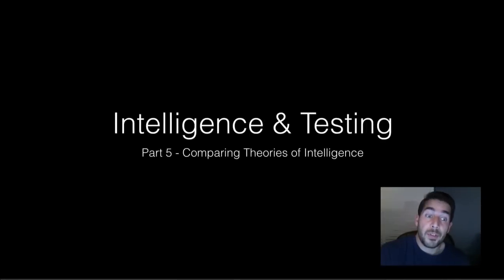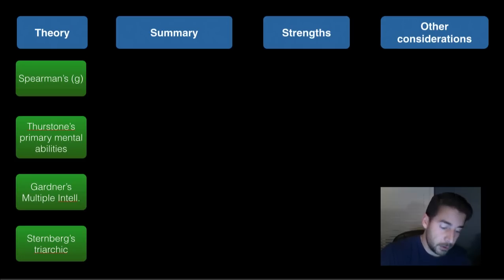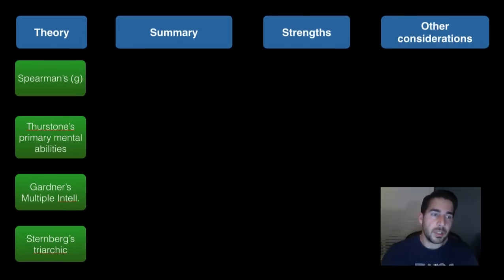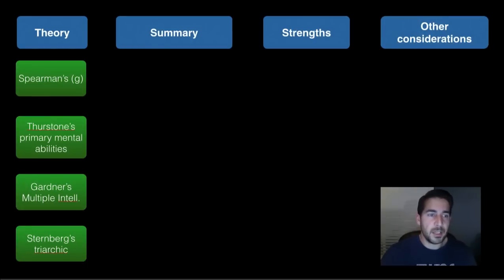Here we go with part 5. We're going to review and compare the theories of intelligence that we've looked at here. So here we go. Here's the chart. First of all, we're going to look at Spearman's general intelligence here. Spearman's G factor as it were.